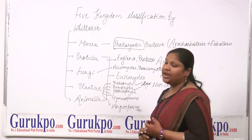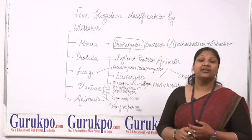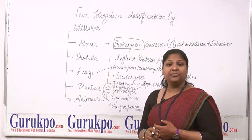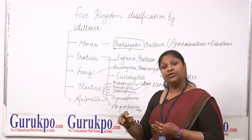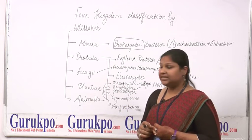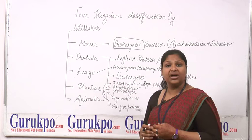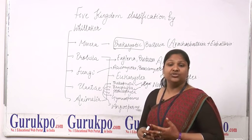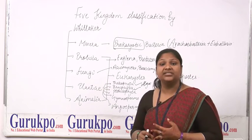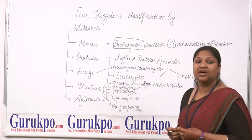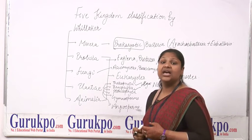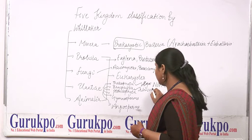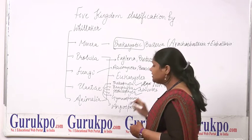Next is Bryophytes. Bryophytes are considered the amphibians of the plant kingdom, because they grow in shallow water and basically obtain their food from shallow water, but their life cycle does not depend totally on water. They have some modifications such as root-like structures called rhizoids.